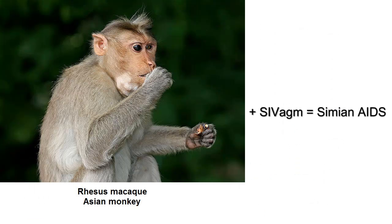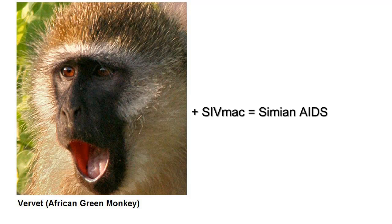However, if you take a rhesus macaque, a monkey from Asia, and infect it with the SIV from the African monkey, or if you infect the African monkey with the Asian virus, the result is called simian AIDS, and it parallels what we see in humans.